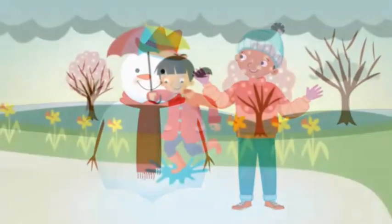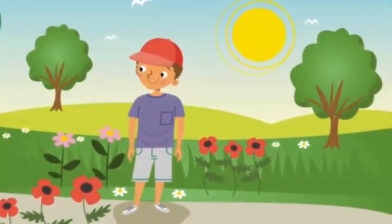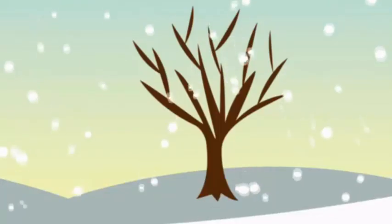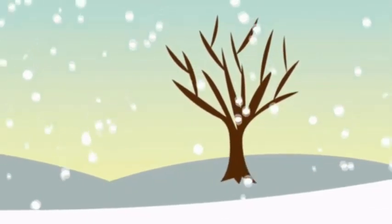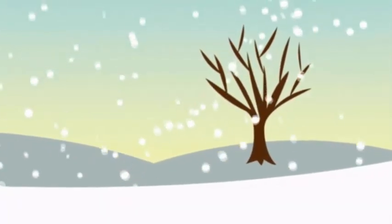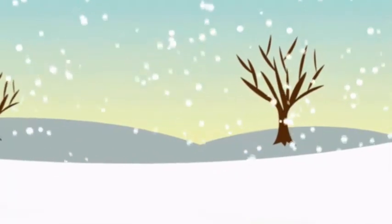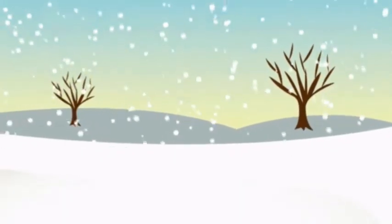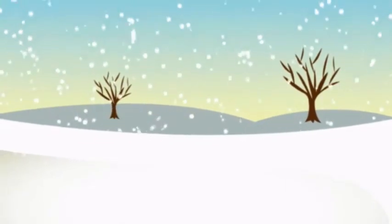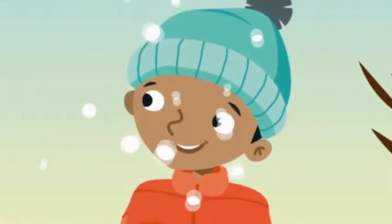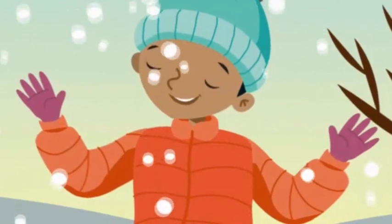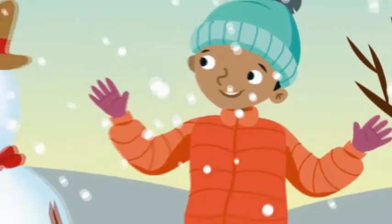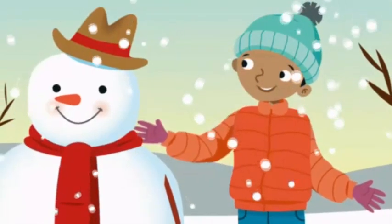There are four seasons: winter, spring, summer, and autumn. It's winter. What's the weather like? It's cold, it's snowy. Look at the snow, everything is white. Can you see the boy? What's he wearing? He's wearing gloves. What's he doing? He's building a snowman.